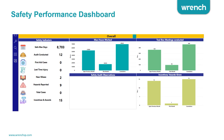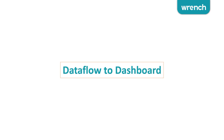All the information required for monitoring project performance is captured from the source and updated. The key question is how this information gets in, because these dashboards look very nice but if they were to be manually updated it would not be a practical system. So let me explain how the data flows into the dashboard from the various sources.